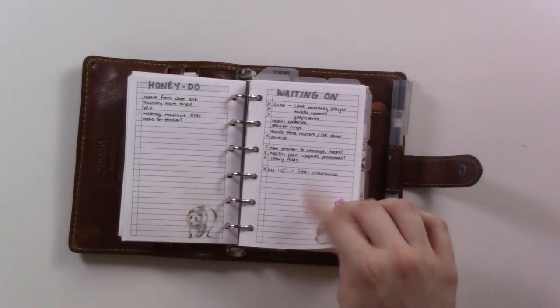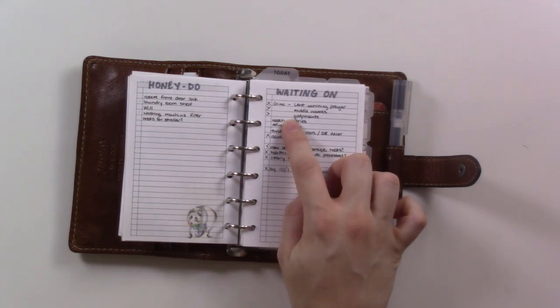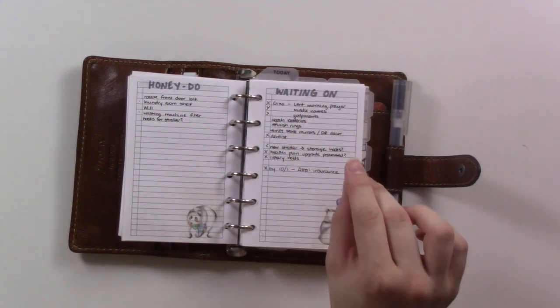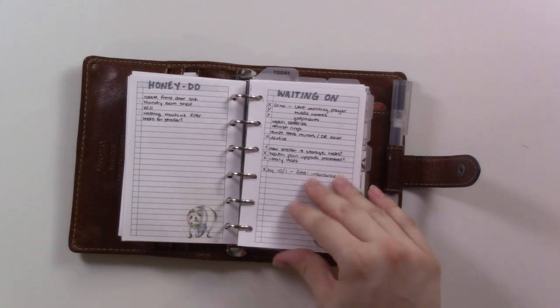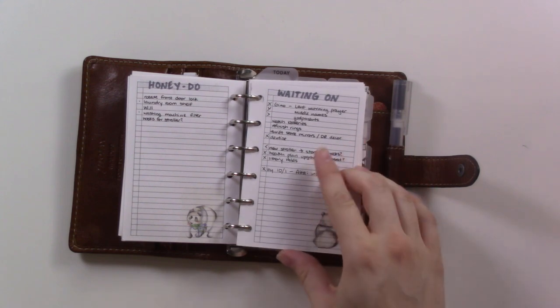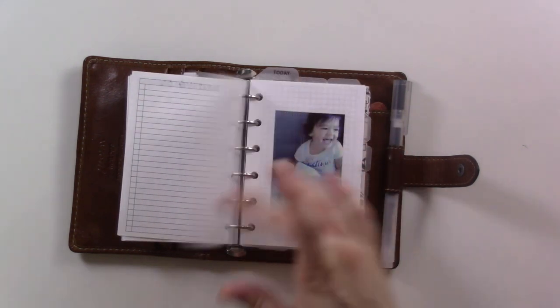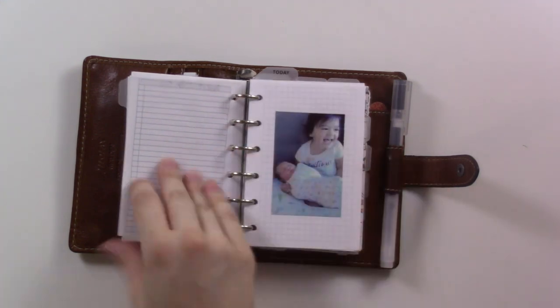This is a someday maybe list, honeydew list, waiting on which is basically, well some this is actually a waiting on thing but these three unchecked items are once we crawl out from under our rock back into society as it were. These are some things I want to do, may have to wait a long time.